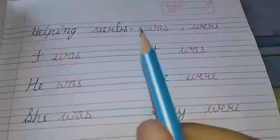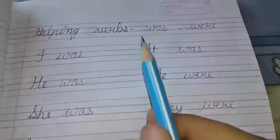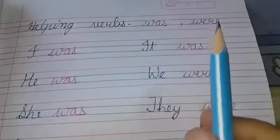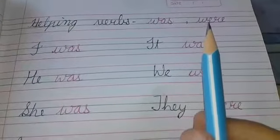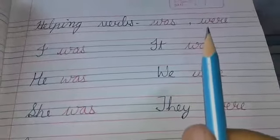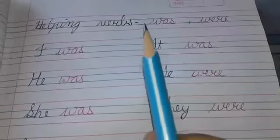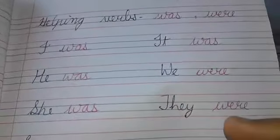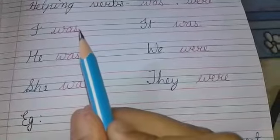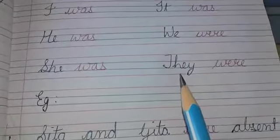Now I will tell you how helping verbs 'was' and 'were' are used. 'Was' refers to one person, place, animal, or thing. 'Were' refers to more than one person, place, animal, or thing. These indicate the past, while is, am, and are indicate the present. 'Was' is used with pronouns I, he, she, it. 'Were' is used with pronouns we and they.